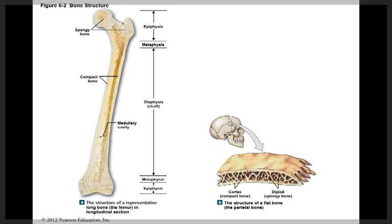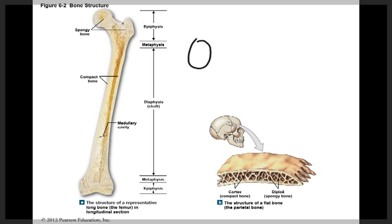In the flat bone, we don't have the diaphysis. Instead, we have the cortex of the bone on both sides, and in the middle of the bone we have a spongy bone, which is also called the diploe.